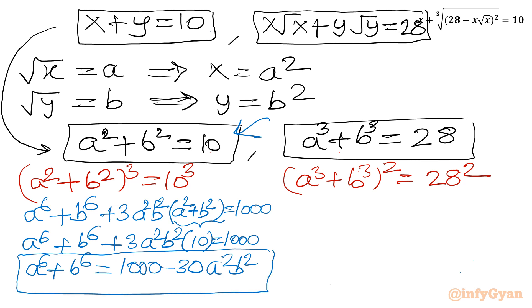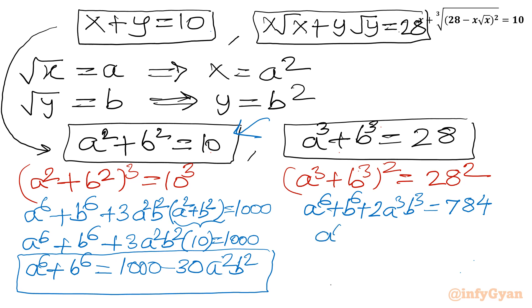Now for the second equation: (a³ + b³)² expands to a⁶ plus b⁶ plus 2a³b³ equal to 28² which is 784. From here, a⁶ plus b⁶ equals 784 minus 2a³b³.